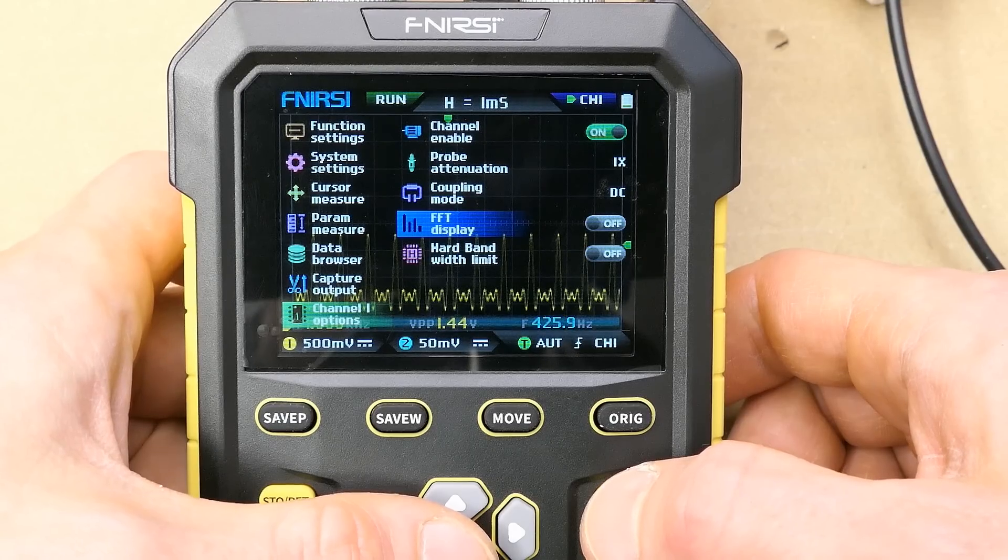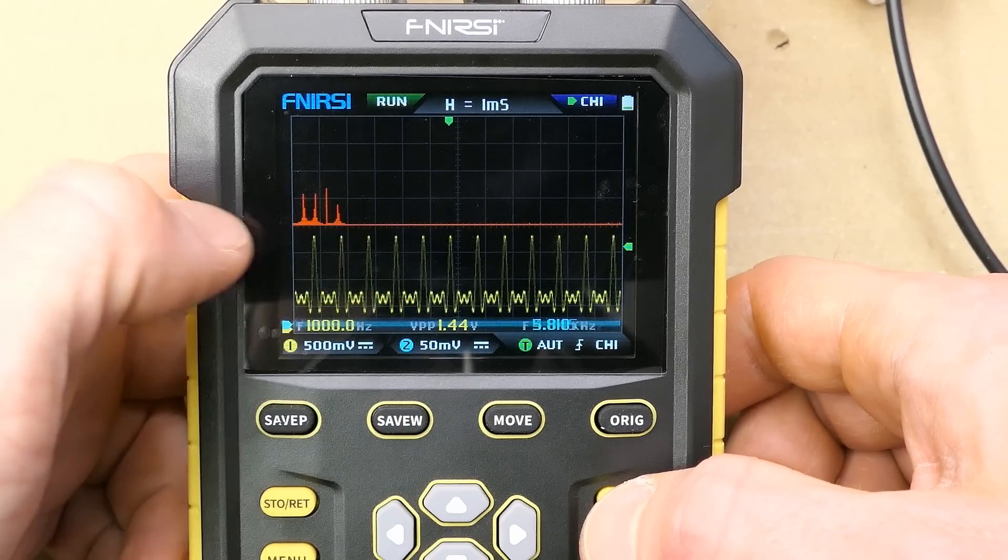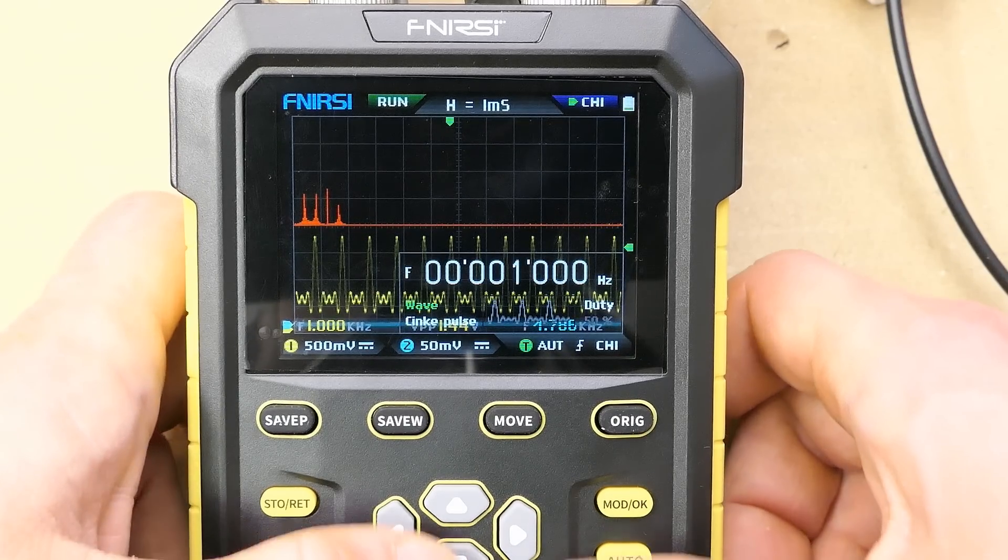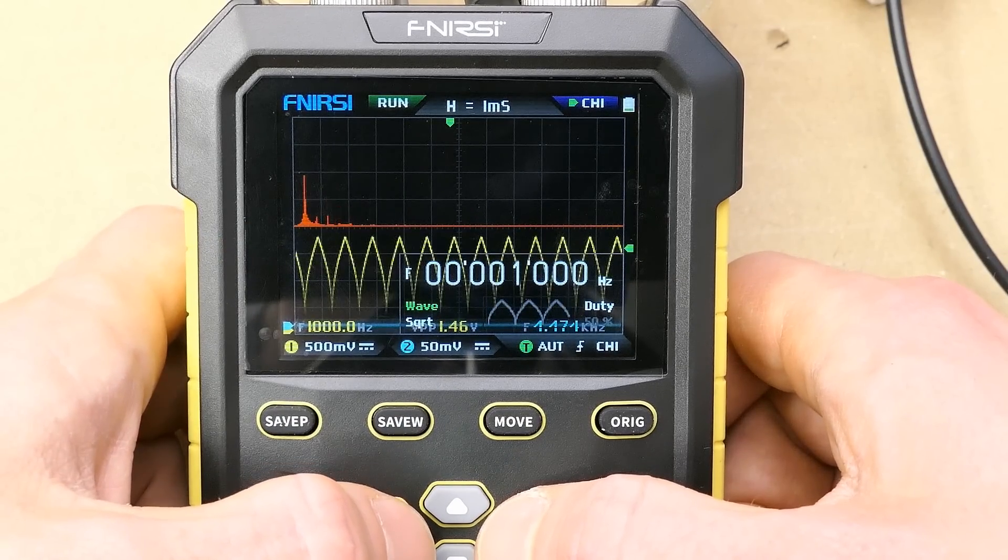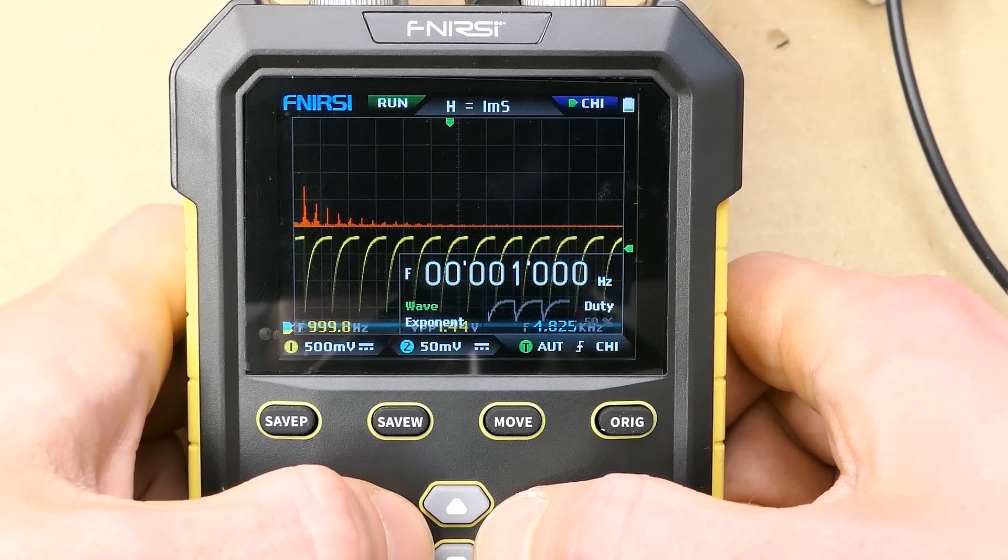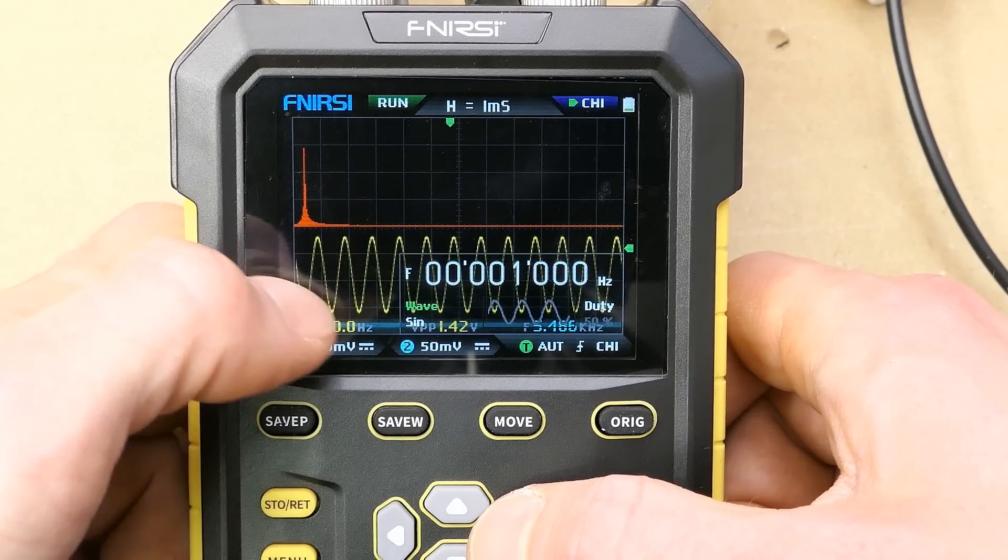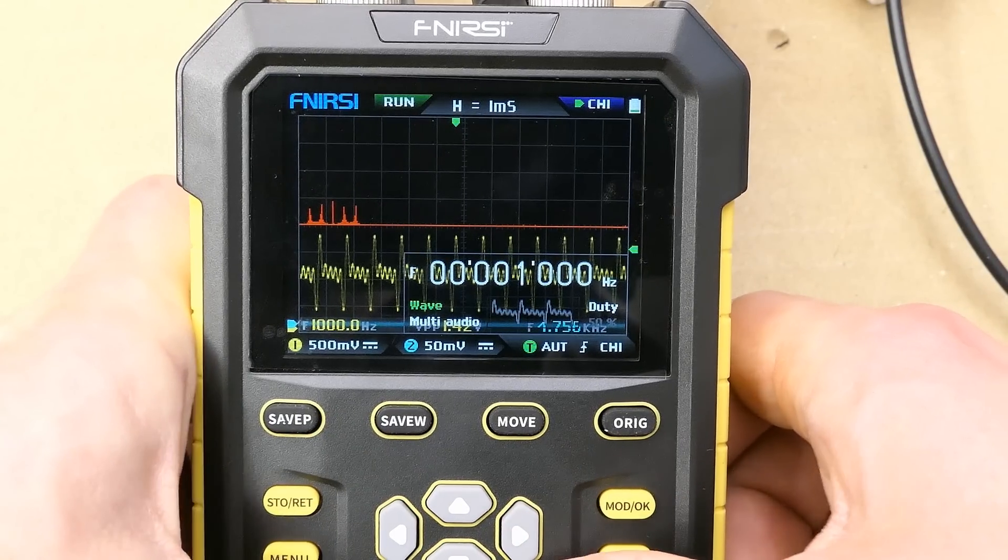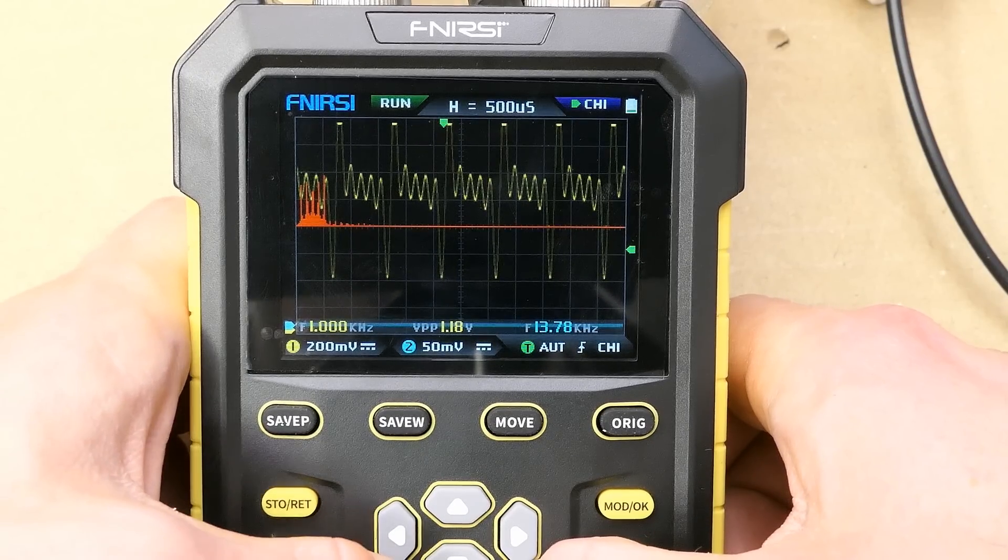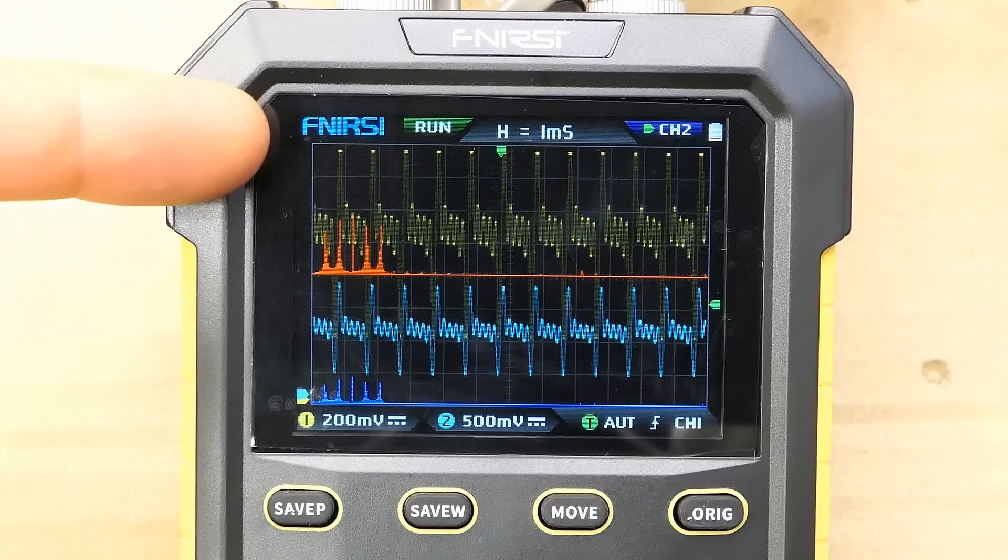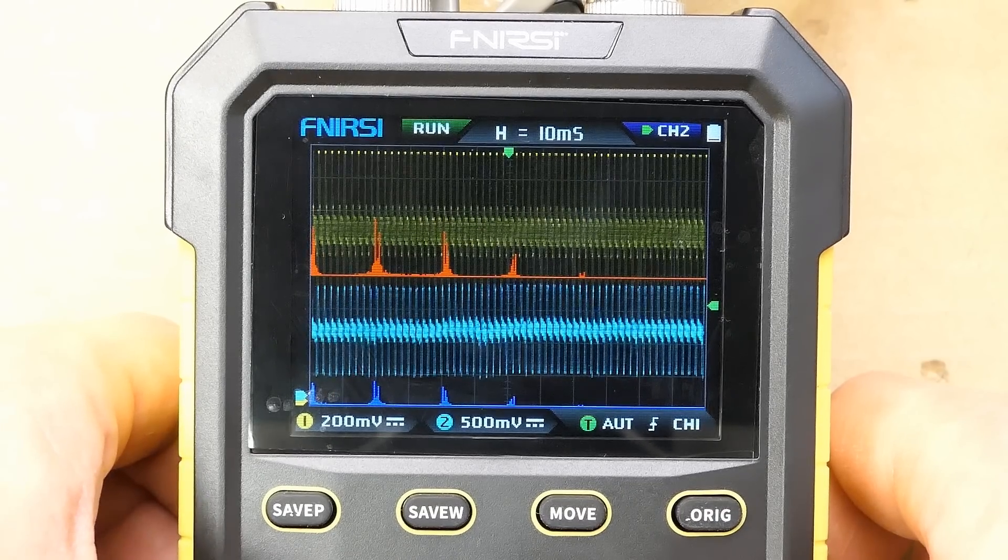And for each channel you can activate the FFT, the Fourier transformation, and you can see it here in red, I've connected the channel one to the function generator in it, and you can see it shows various Fourier transformations for various waveforms, some of them have some harmonics, a sine wave will have no harmonics, here it is, no harmonics in it, other waveforms of course have a lot of harmonics, and each channel can have its own FFT, the second channel is in blue here, not bad.